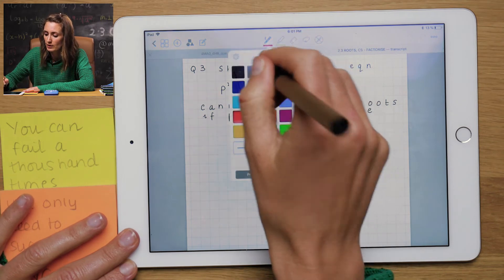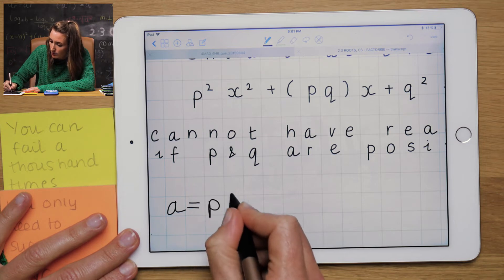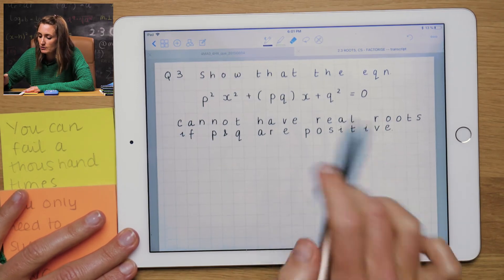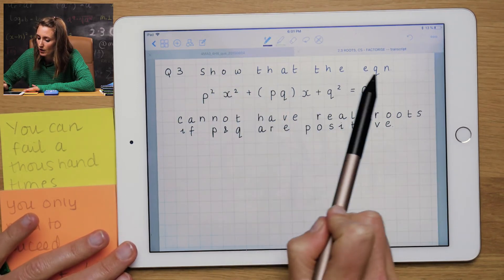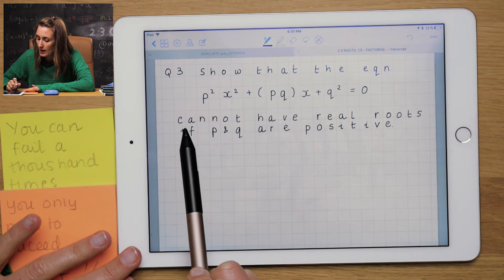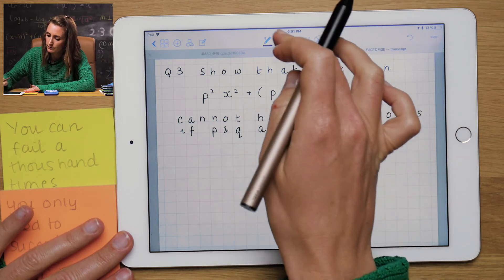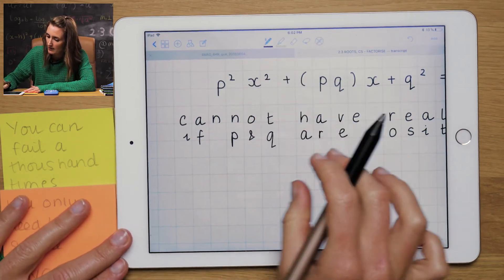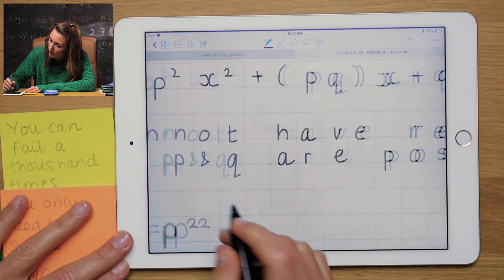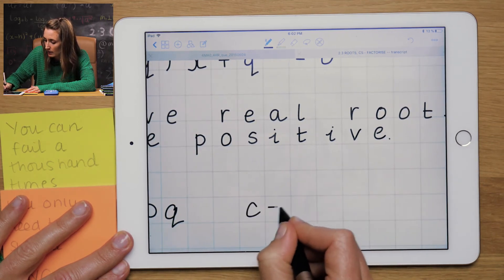Okay. Very, very last one in the whole course. So stay with me here. Let me read the question. If my students don't read the question, I always tell them off. Show that the equation p squared x squared plus pqx plus q squared cannot have real roots if p and q are positive. So this is a little bit of a tricky one. It's going to start the same though. We're going to write down our a p squared, b pq, and c q squared.